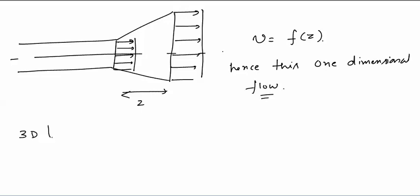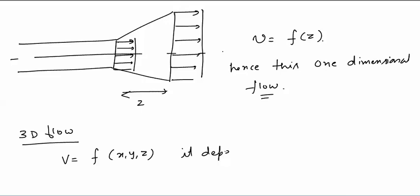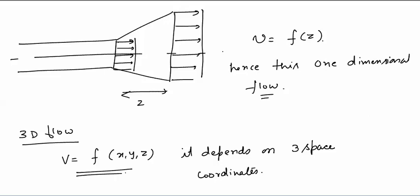If in a changing cross-section we take an ideal condition where fluid velocity does not change with respect to R and only changes with respect to Z, then velocity is only a function of Z — hence it is 1D flow. Three-dimensional flow is where velocity is a function of (x, y, z) and depends on three space coordinates.